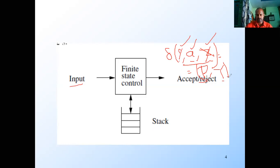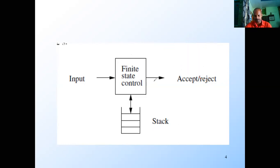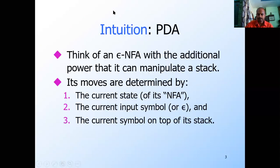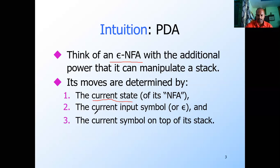The pushdown automata is an epsilon-NFA with the power of a stack, with extra memory. What it takes as input is: the current state of the finite automata, the current input symbol — or it may be epsilon also, because it is an epsilon-NFA — and the current top of the stack. These three are considered for the transition.